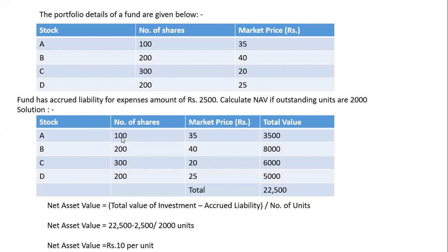This is the solution. First, take a multiplication of number of shares with trading prices. You will get the total value of stock A, total value of stock B, total value of stock C, and total value of stock D. After multiplying, you will get total value of 22,500. This is your asset. Asset minus liability — 2500 is your liability — 22,500 minus 2500 divided by 2000 units. NAV is rupees 10 per unit.